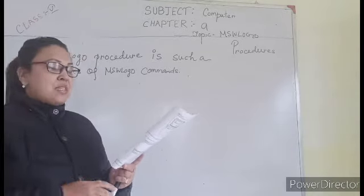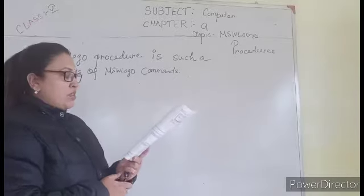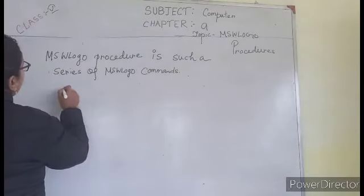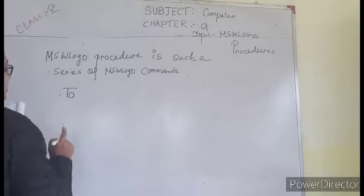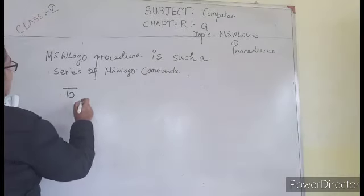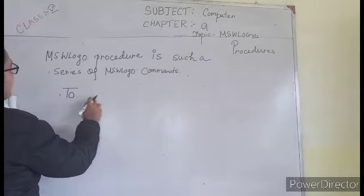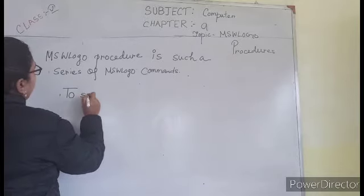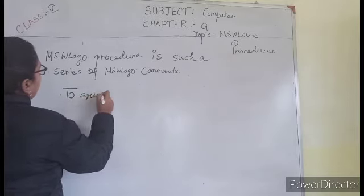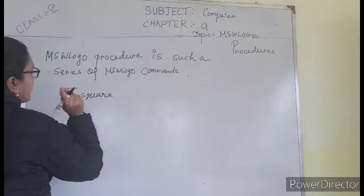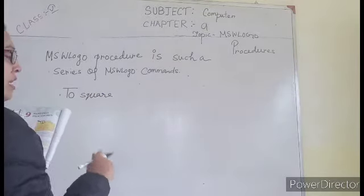So do the same thing. Suppose I am drawing a square. So what do you do? First I leave TO, the word. Then only, suppose square. Give one space. In between TO and the name, give one space. Suppose I am making the same name square, S-Q-U-A-R-E, by giving you a single space here. Okay, then only enter.